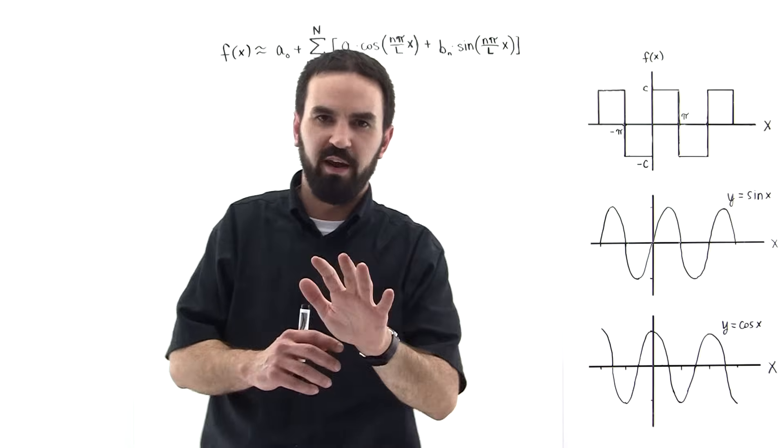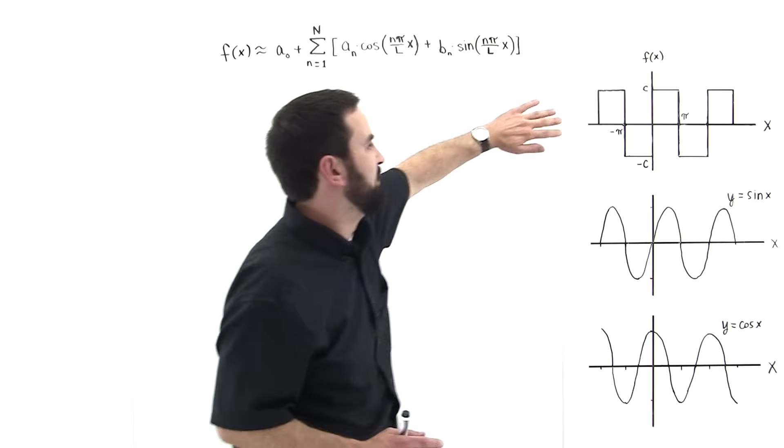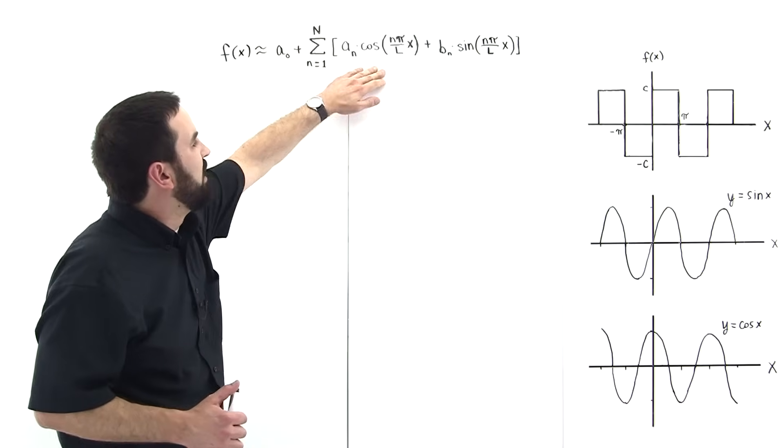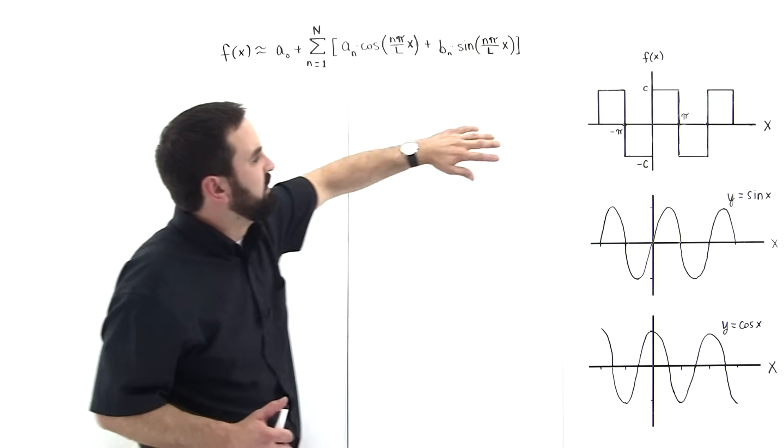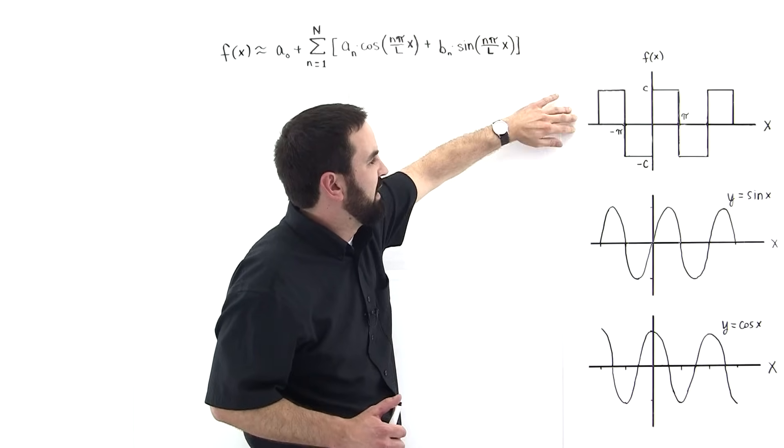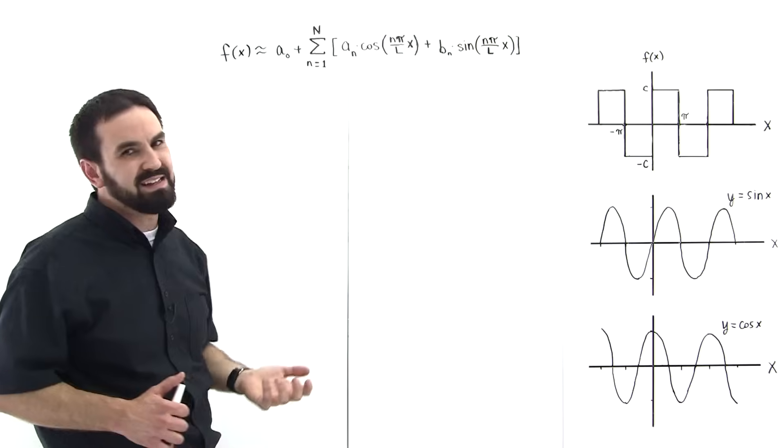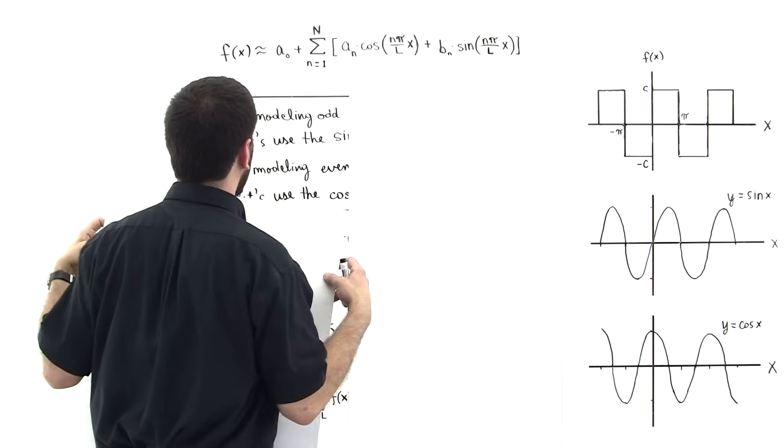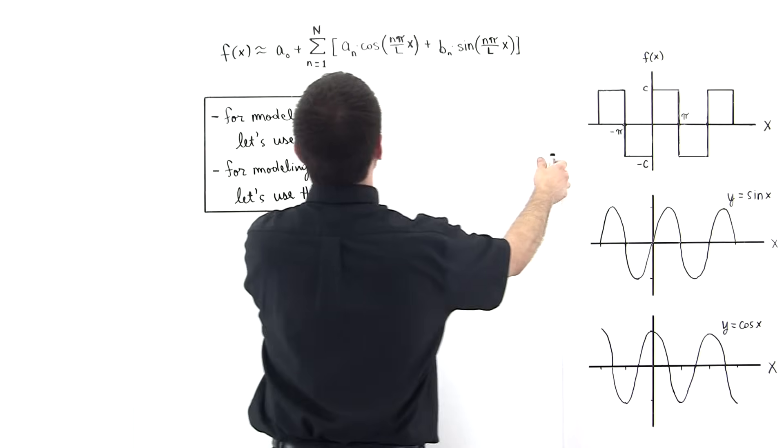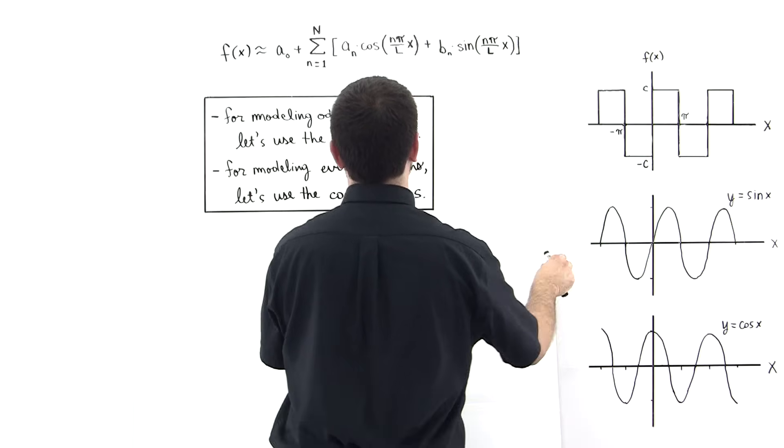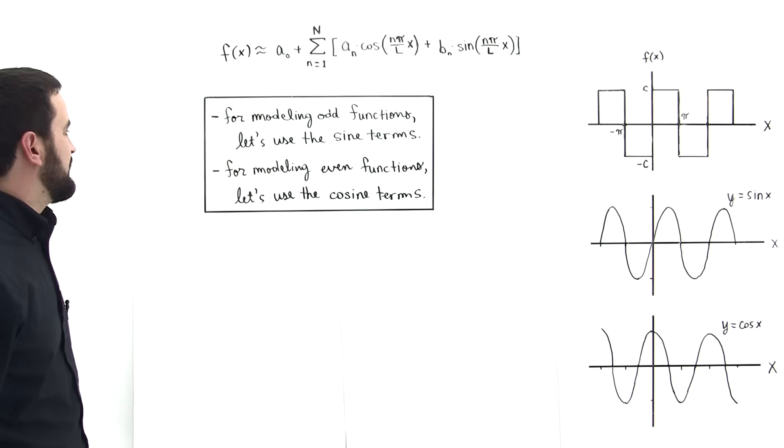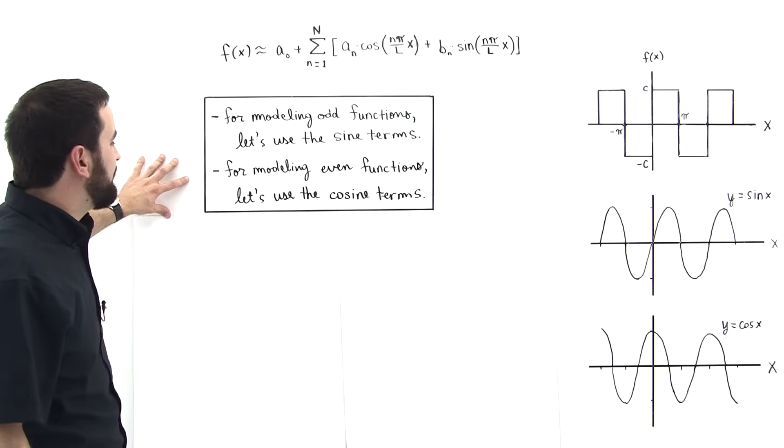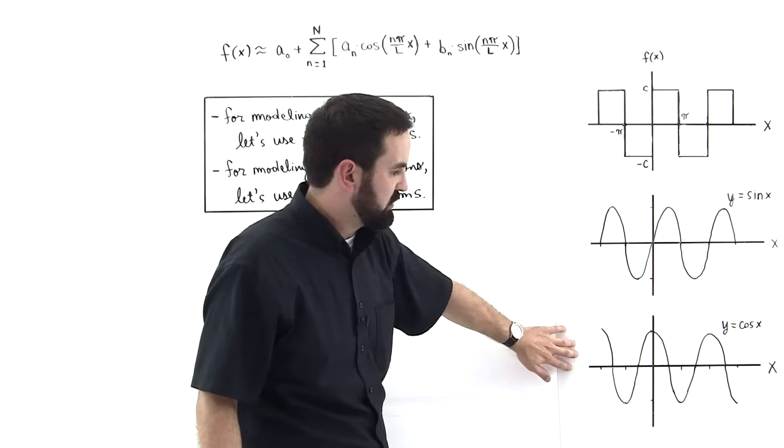So, this sine function is a better approximation to this than this cosine function is. The cosine is off, right? It's out of phase with the function that we're trying to model. So, if we were using these terms here in our mathematical model that we're used to model this, these cosine terms would be working against us. So, we conclude the following. For modeling odd functions, let's use the sine terms. The sine function. And for modeling even functions, let's use the cosine. Cosine function. Make sense?